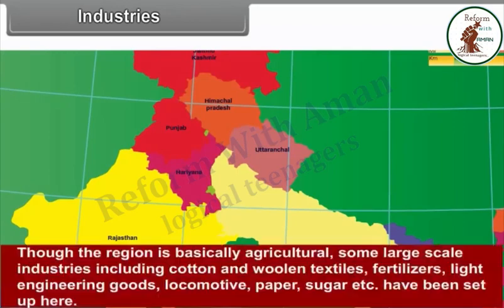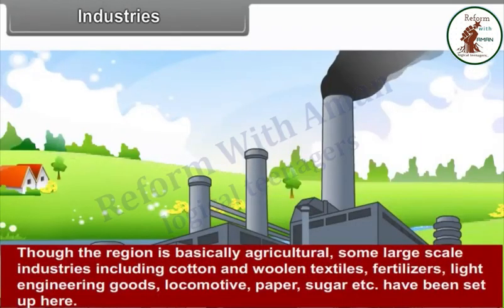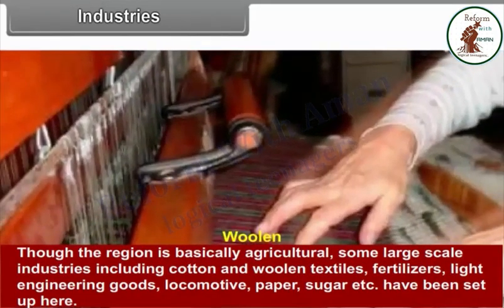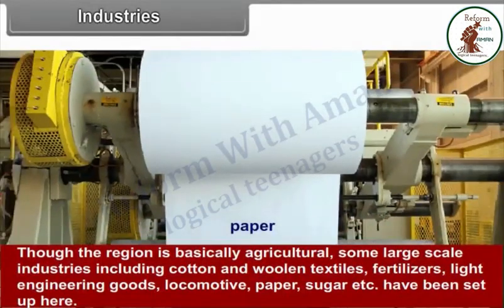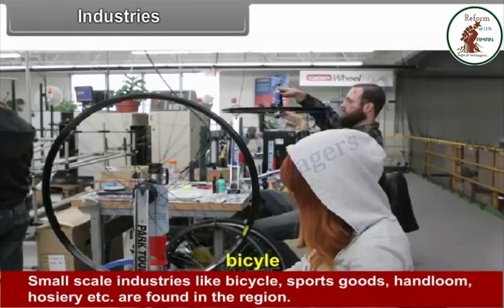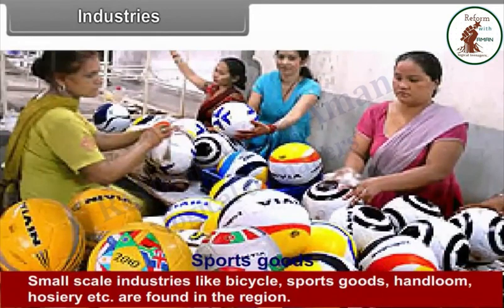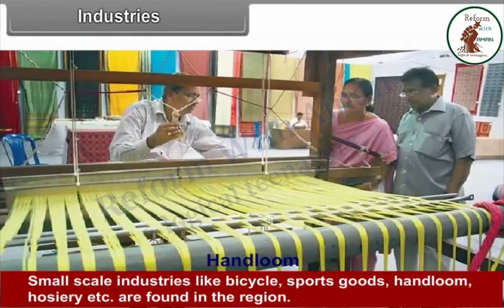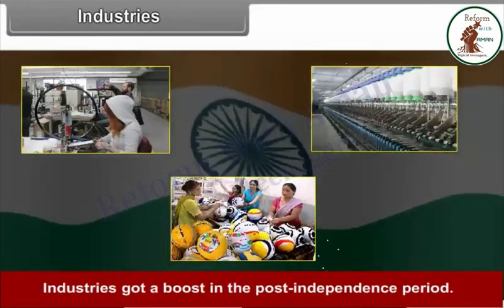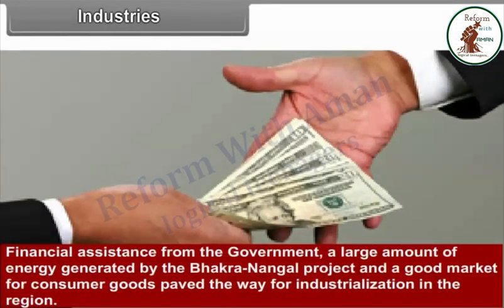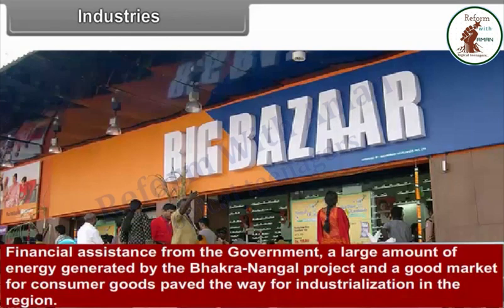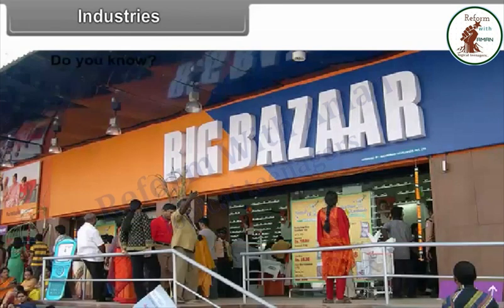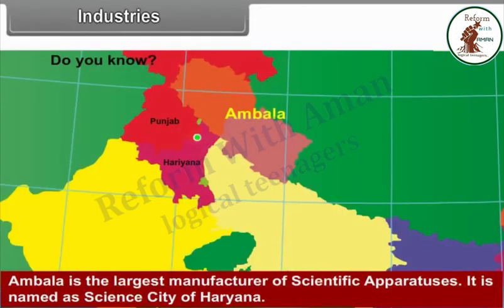Industries: Though the region is basically agricultural, some large-scale industries including cotton and woolen textiles, fertilizers, light engineering goods, locomotives, paper and sugar have been set up here. Small-scale industries like bicycle, sports goods, handloom and hosiery are also found. Industries got a boost in the post-independence period. Financial assistance from the government, a large amount of energy generated by the Bhakra Nangal project and a good market for consumer goods paved the way for industrialization. Ambala is the largest manufacturer of scientific apparatuses and is named the Science City of Haryana.